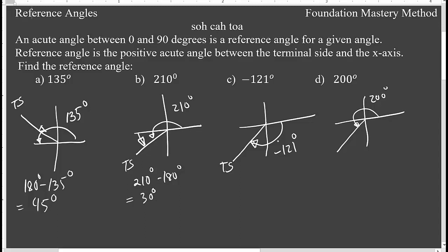For negative 121 degrees, the reference angle goes from the positive x-axis direction to the terminal side. I can find 180 minus 121, which gives me that direction — so this one is 59 degrees.